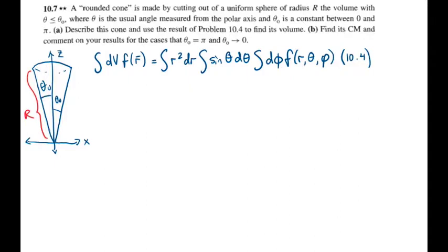As I've drawn here, part A asks us to describe this cone and use the result of problem 10.4 to find its volume. The result of problem 10.4 is just the integral of a function of position over a volume written in spherical coordinates. We're just finding its volume, so we'll be integrating dV over the volume. I'll just copy this out and then we'll find the limits of integration.